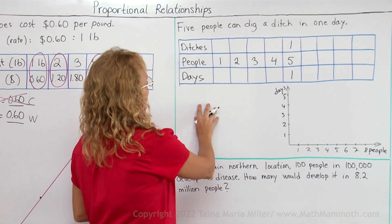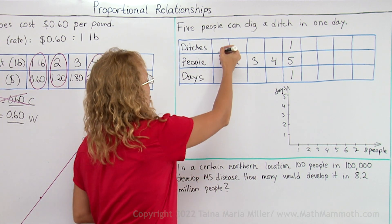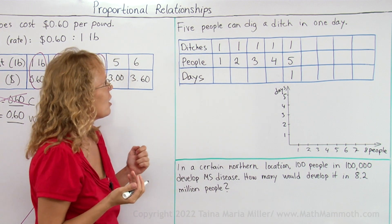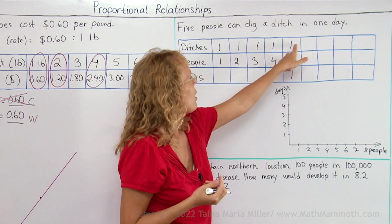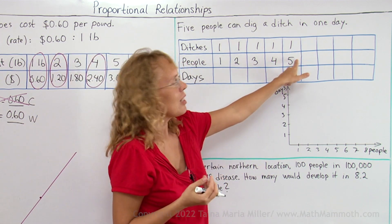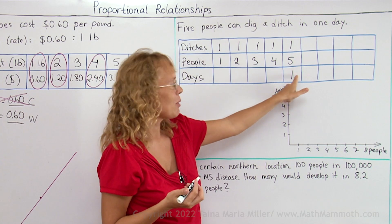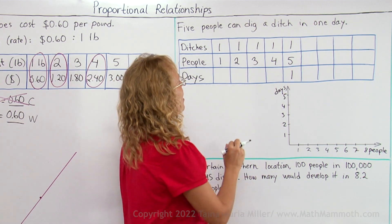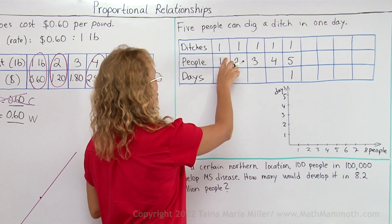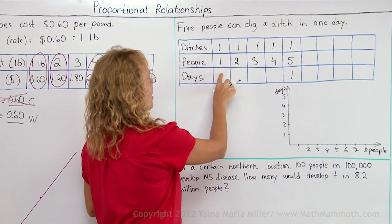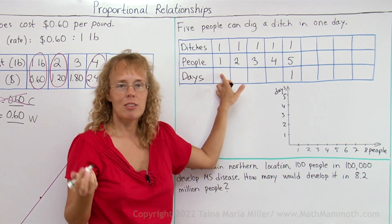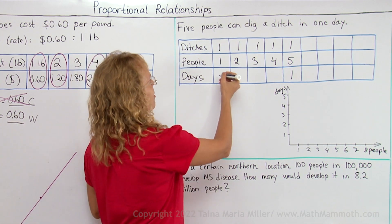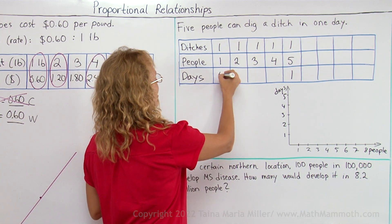Let's say first of all that we will examine the situation of one ditch — that we're not changing the number of ditches. If there's one ditch and five people can dig it in one day, that gives us one rate. But what happens if we have one person? Then how many days would they take to dig that one ditch? They would surely take five times as long, right? Or five days.